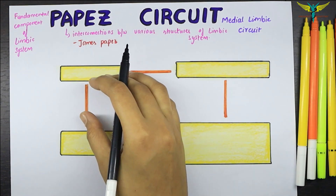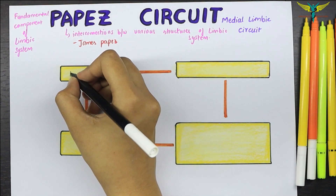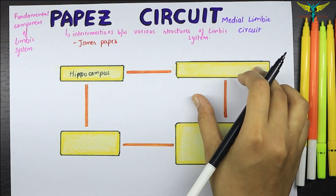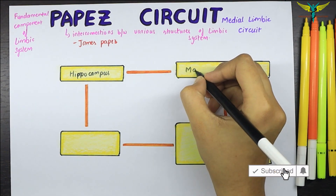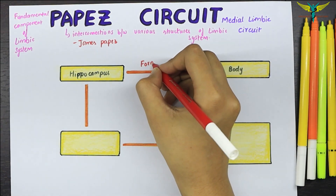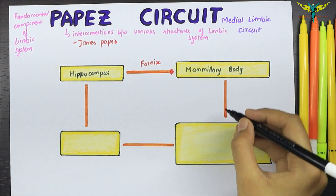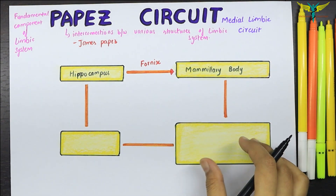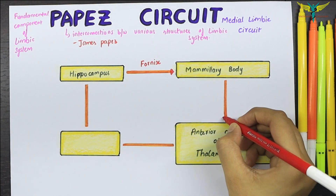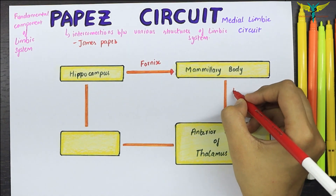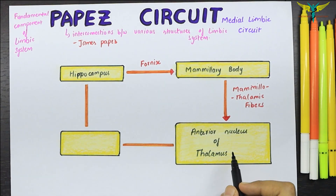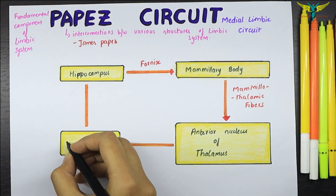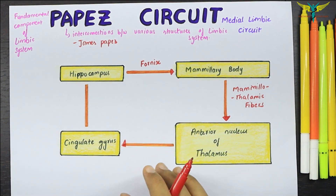The Papez circuit starts and ends at the hippocampus. The hippocampus is connected to the mammillary bodies of the hypothalamus via the fornix. These mammillary bodies of the hypothalamus are connected to the anterior thalamic nuclei via the mammillothalamic fibers. The anterior nucleus of the thalamus is then projected into the cingulate gyrus, connected through the medial thalamocortical fibers.